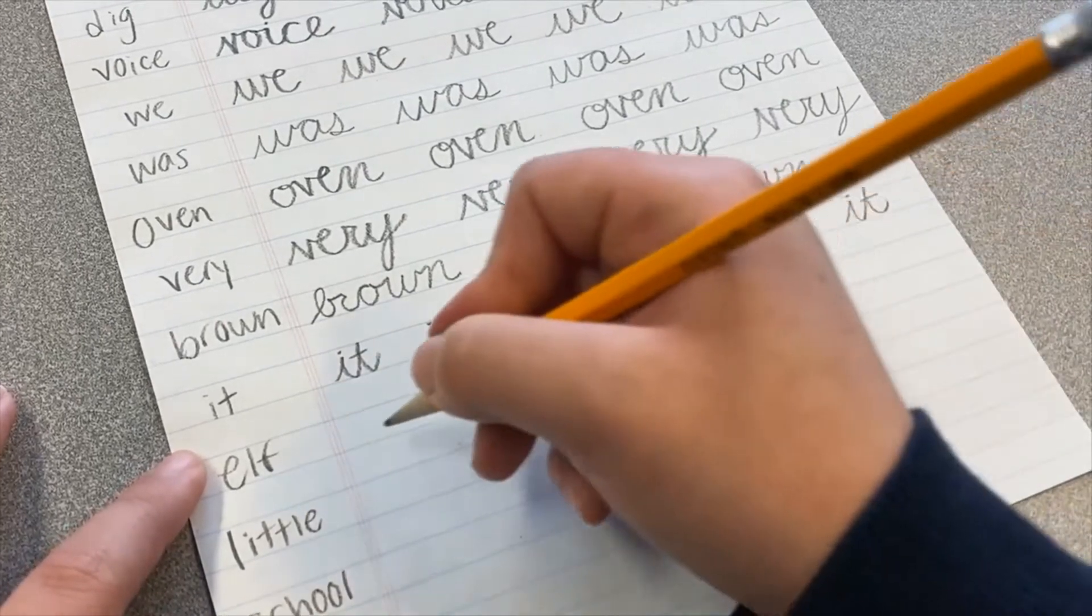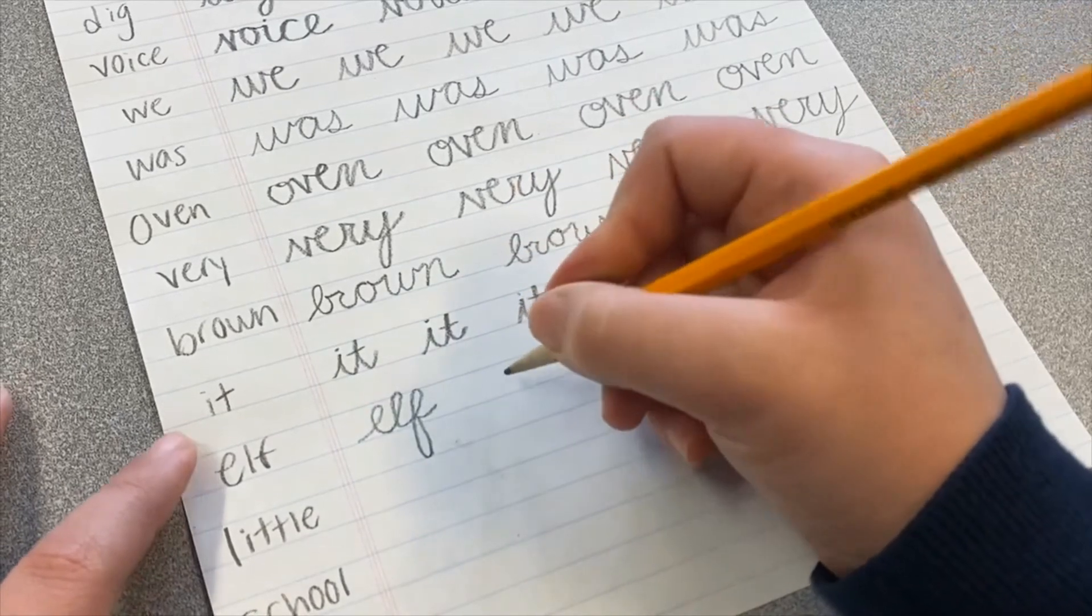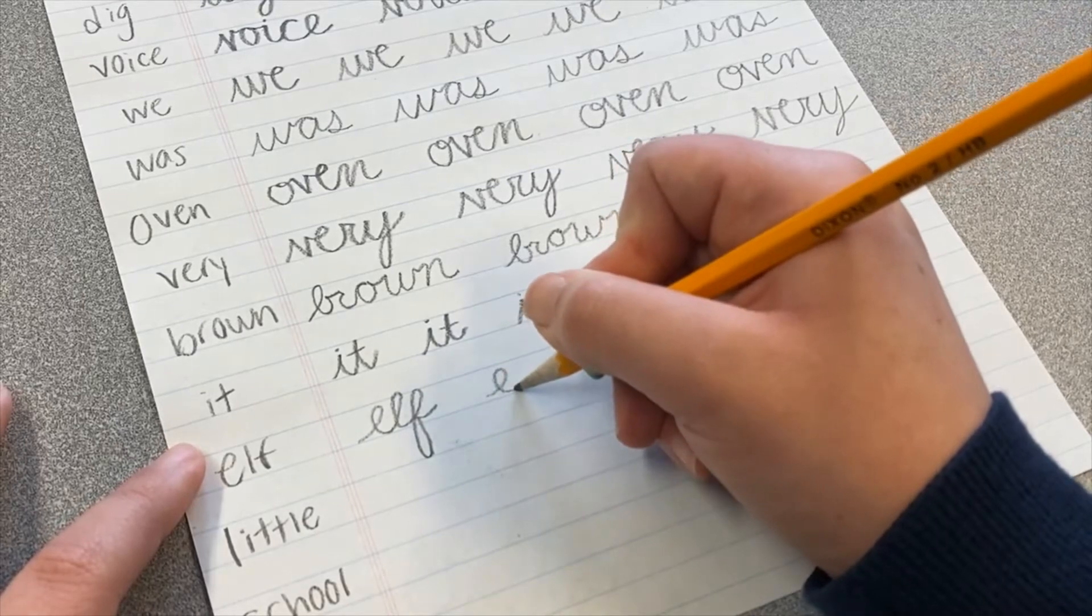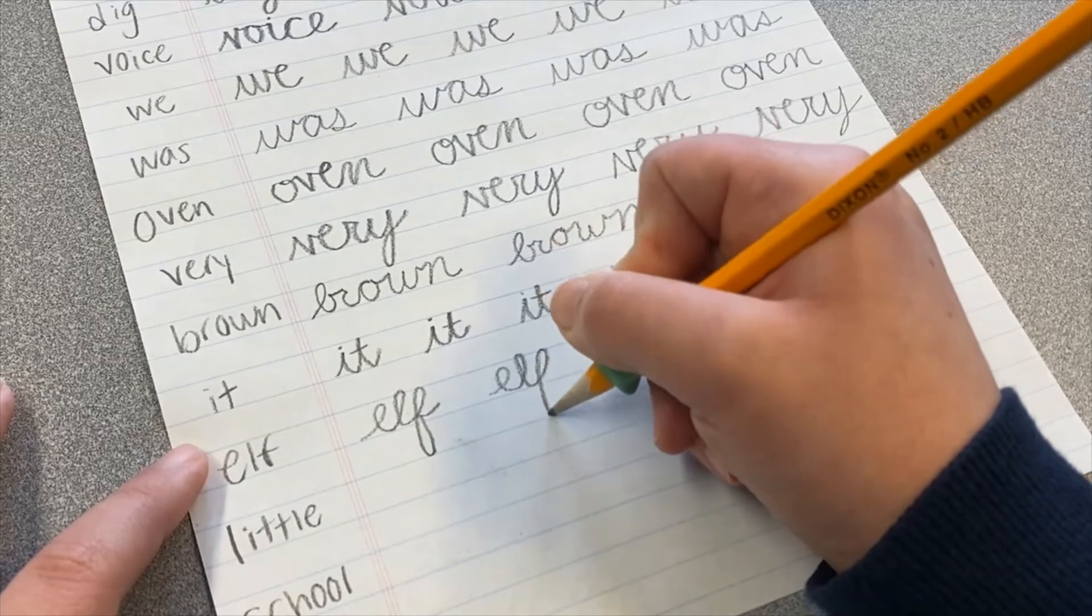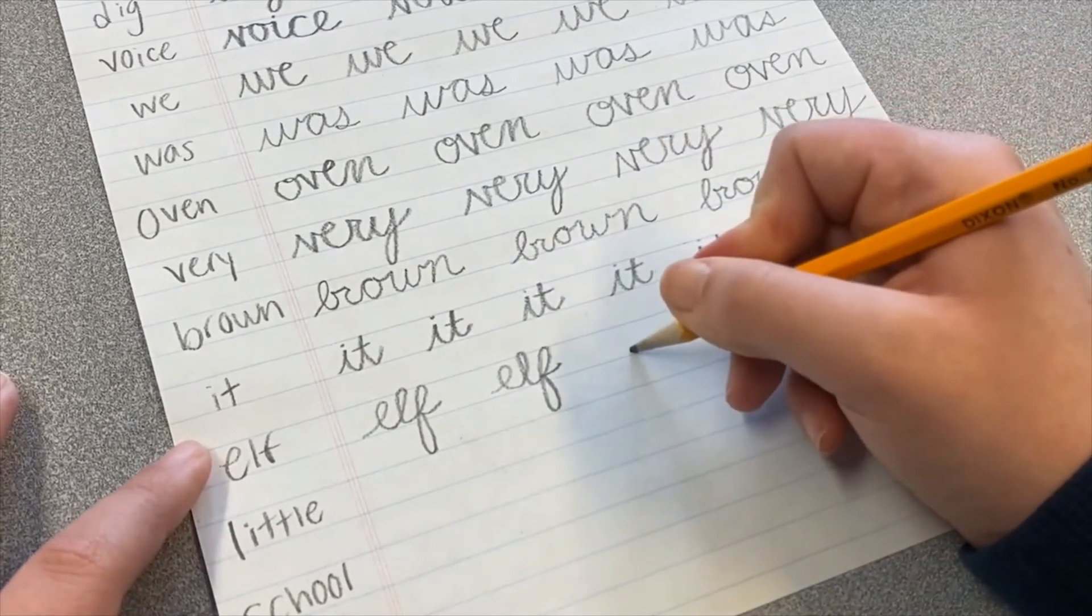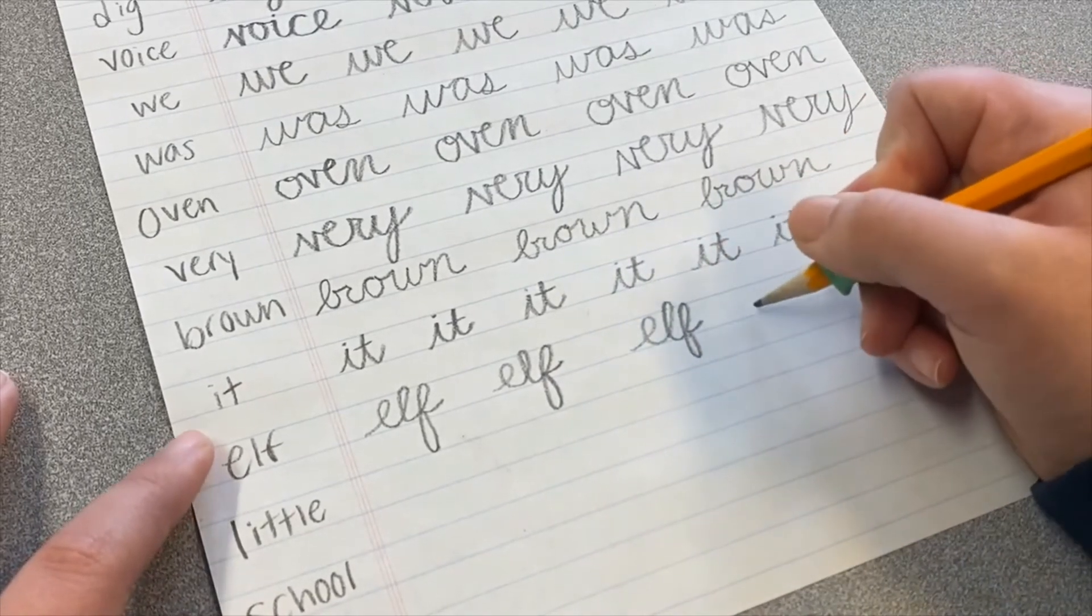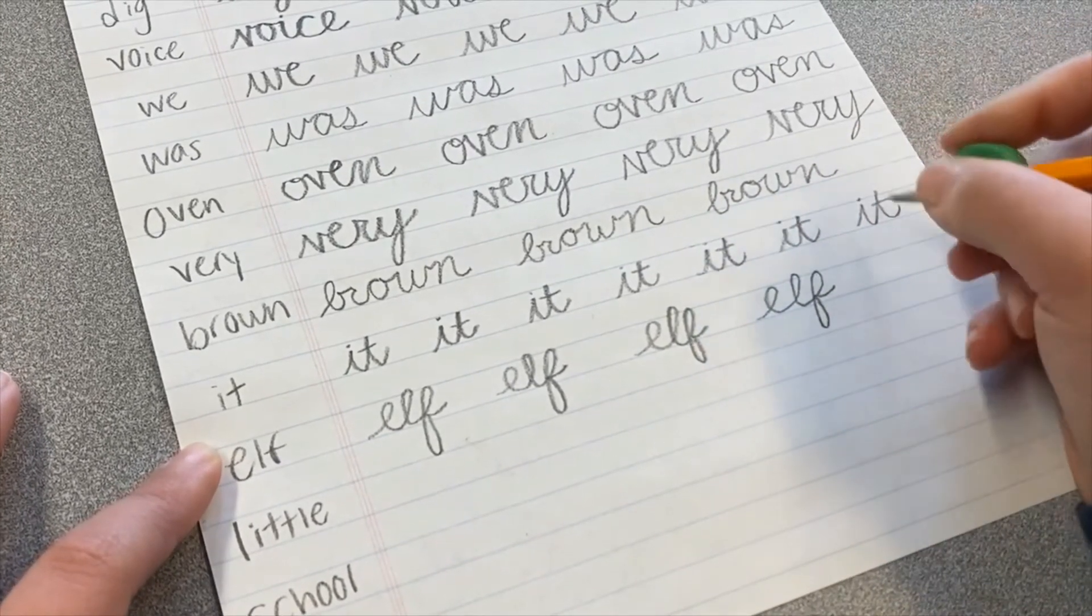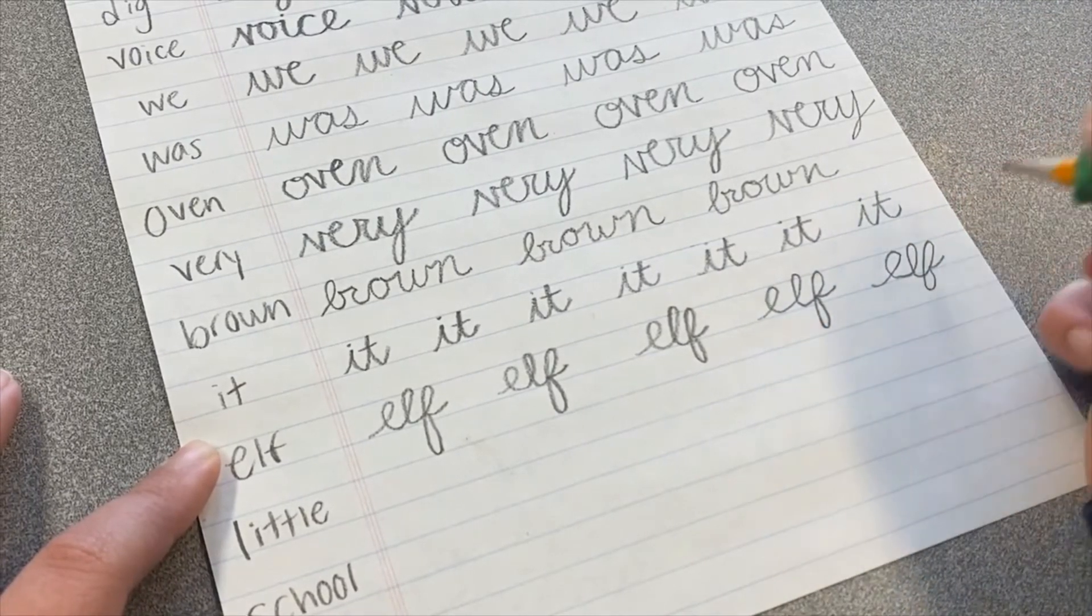The next word is elf, E-L-F. Lots of loops in this word, so it's important to make sure that your letters look different. So you have your E, and then the L is skinny, and then the F has a loop, and it loops back in, and then it comes out. E-L-F. So this is one to really pay attention to how you're making your letters, because you want someone to be able to read this word.